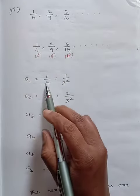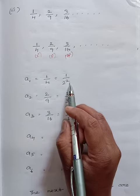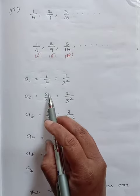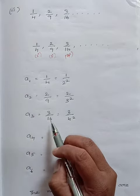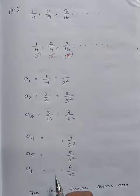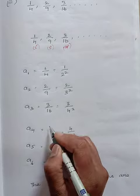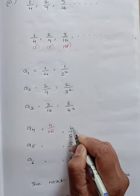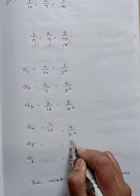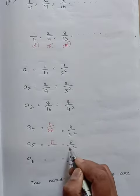So a₁ is 1 by 4, we can write as 1 by 2 square. The second term is 2 by 9, that is 2 by 3 square. The third number is 3 by 16, that is 3 by 4 square. So automatically we can do the fourth number a₄, that is 4 by 25, which is 4 by 5 square. Next term is 5 by 6 square, that is 5 by 36.